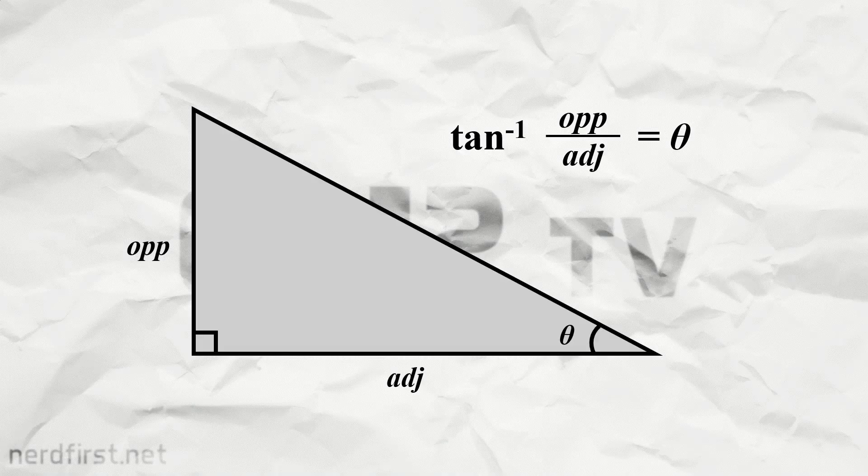But here's the deal — what if you only know the ratio, and you're trying to find the angle? No problem, right? We can always do the inverse tangent, also known as the arctangent of the ratio, and that will give you back the angle. In the context of a right-angled triangle, that's basically the end of the story.